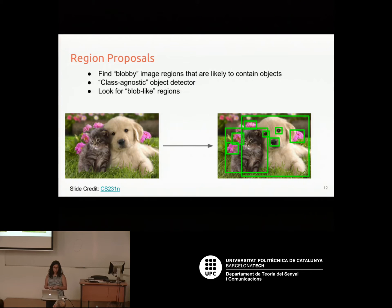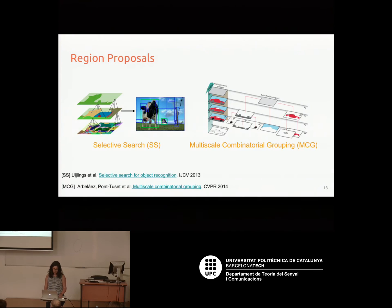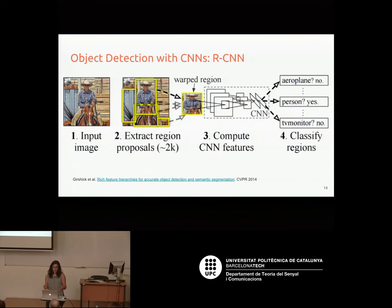There are algorithms called region proposal algorithms. You run one on an image and it gives you a set of regions likely to contain objects — going from maybe a million possible bounding box locations down to around 2,000, which is much more manageable. Two popular examples are Selective Search, which returns bounding boxes, and Multi-Scale Combinatorial Grouping, which also returns segments.